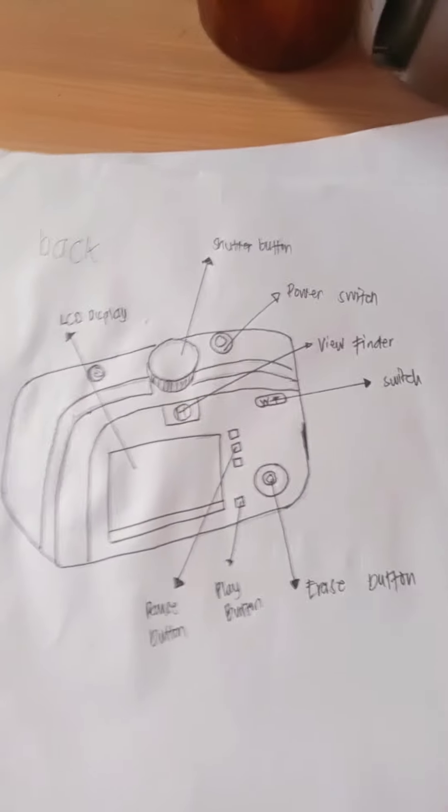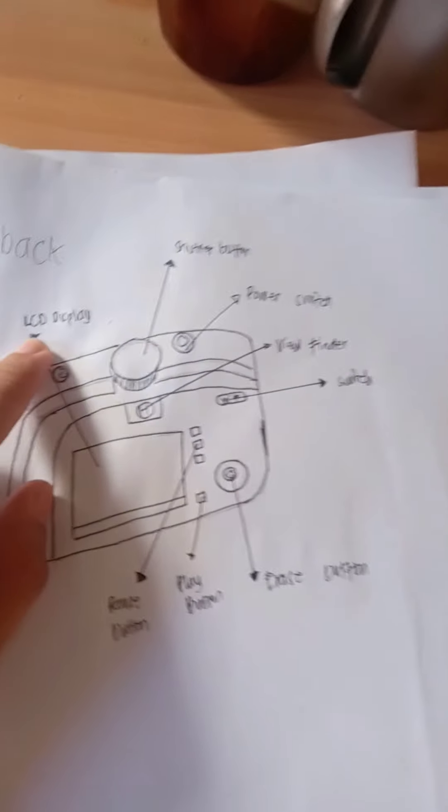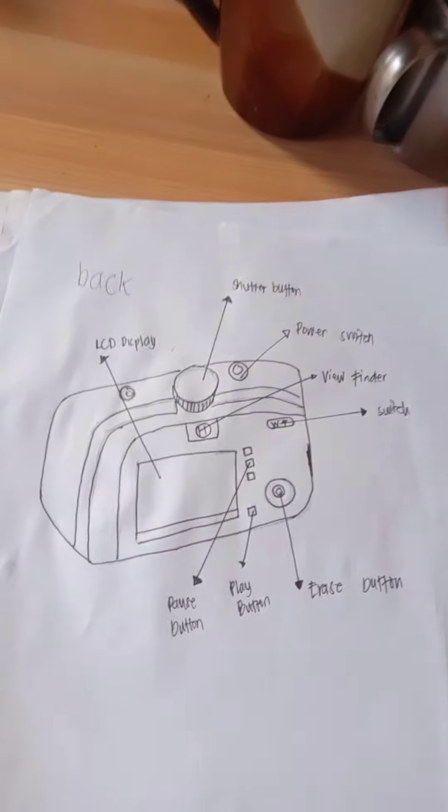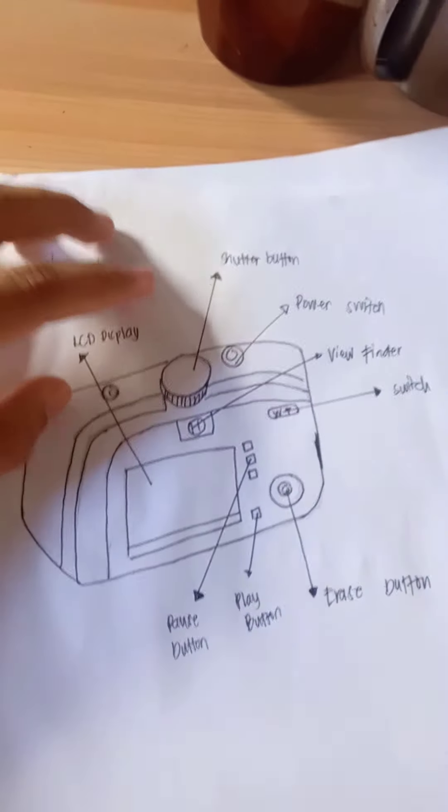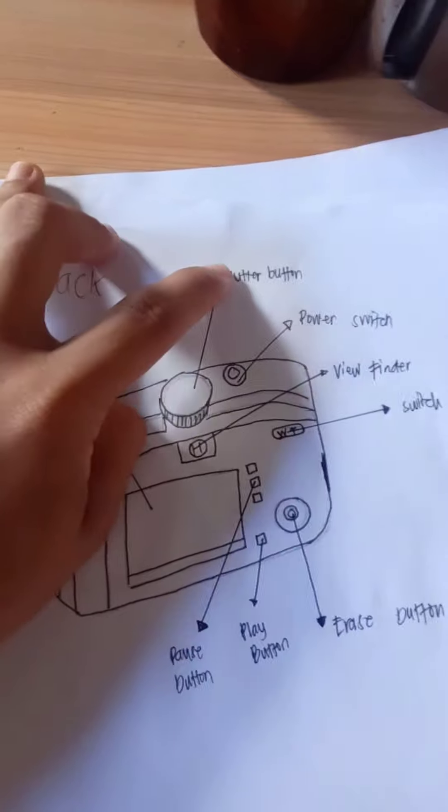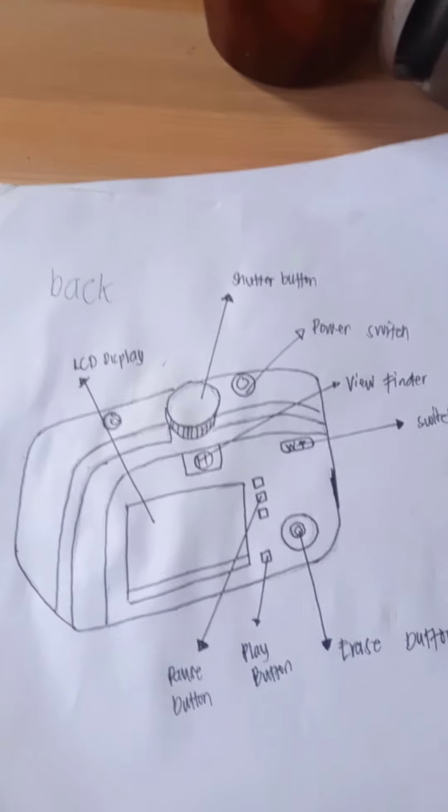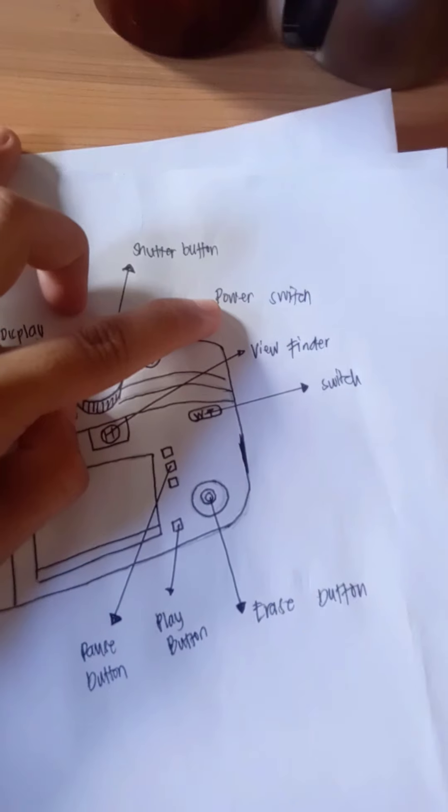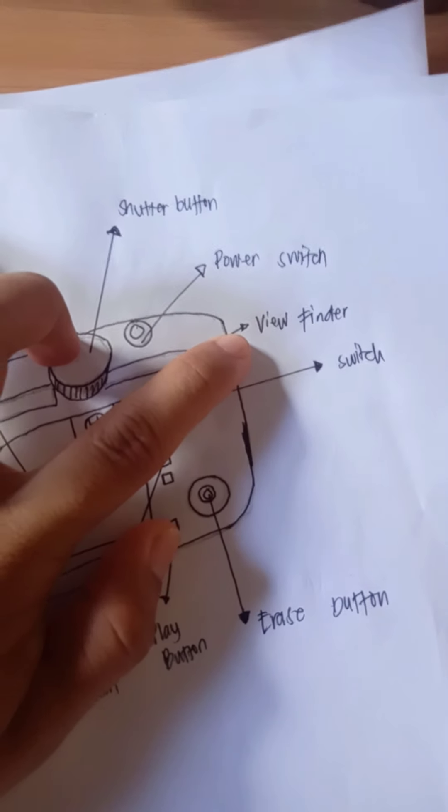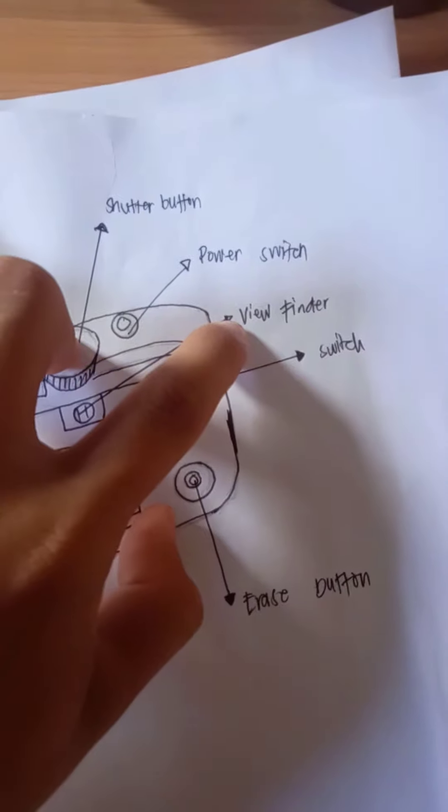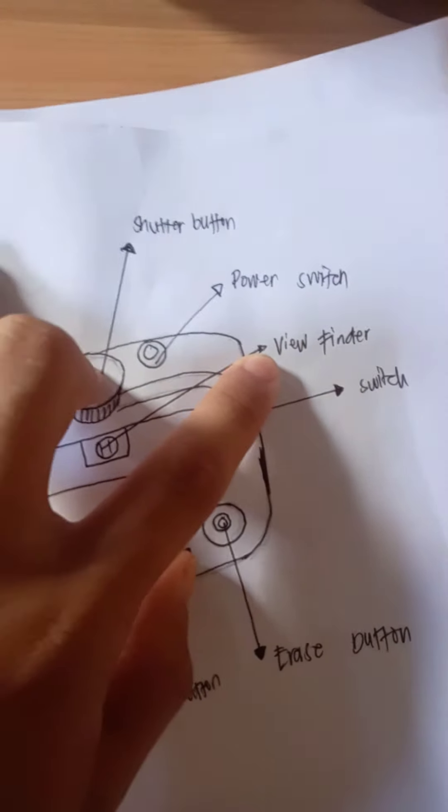Digital camera back view. LCD display, found in the back of the camera, can vary in size. Shutter button, when you press the shutter of the camera it's used to proceed photographs. Power switch used to turn on and off the camera. Viewfinder can be found on all DSLRs and some models of digital compact cameras.